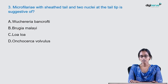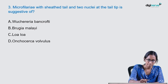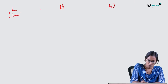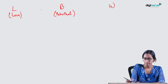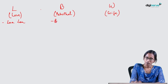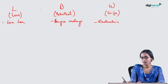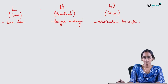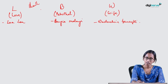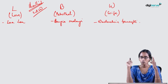Next question: Microfilaria with sheath, tail, and two nuclei at the tail tip is suggestive of? The mnemonic is LBW — Love, Betrothal, Wife. L for Loa loa, B for Brugia malayi, W for Wuchereria bancrofti. These are the sheath microfilariae. Compare nuclei to phone calls: in Love (Loa loa) you are on phone calls throughout — nuclei present throughout. At Betrothal (Brugia malayi) — two widely separated nuclei. When married, Wife (Wuchereria bancrofti) — no phone call, no nuclei at tail tip.